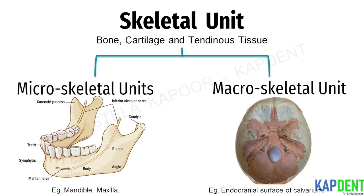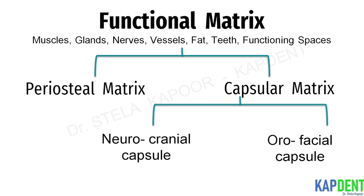When the adjoining portions of a number of neighboring bones are united to function as a single cranial component, we term this a macroskeletal unit. One example of this is the endocranial surface of the calvarium. The functional matrix consists of muscles, glands, nerves, vessels, fat, teeth and the functioning spaces. This matrix is divided into the periosteal matrix and the capsular matrix. The neurocranial capsule surrounds and protects the brain, leptomeninges and the CSF, while the orofacial capsule surrounds and protects the oro-nasopharyngeal spaces.